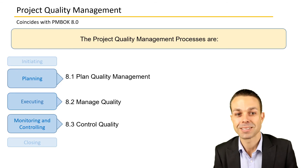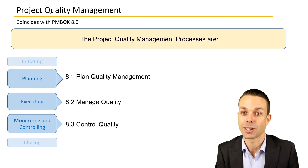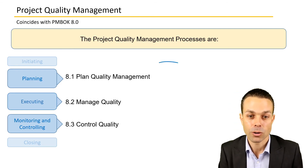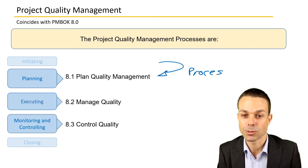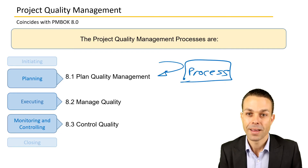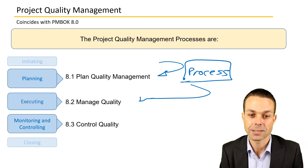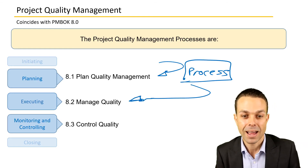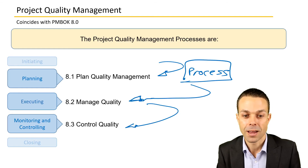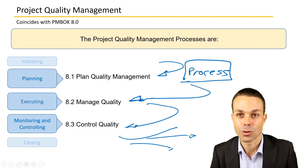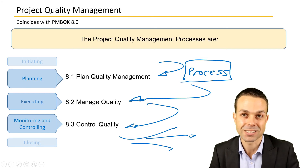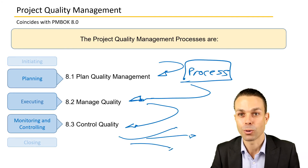The processes in project quality management are: planning quality management — the framework we've seen many times before; then actually managing quality itself, going through that quality management process; and then controlling the quality — making sure it doesn't go off track, and determining what changes are needed to keep things on track or prevent issues in the future.